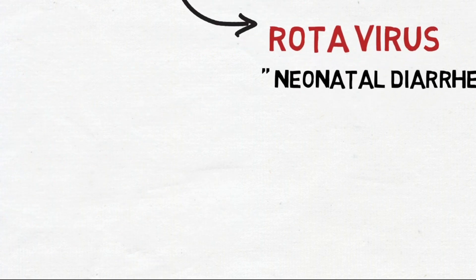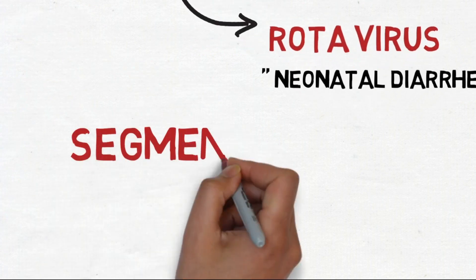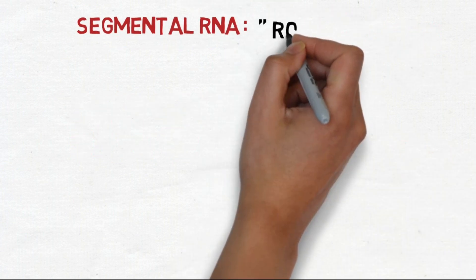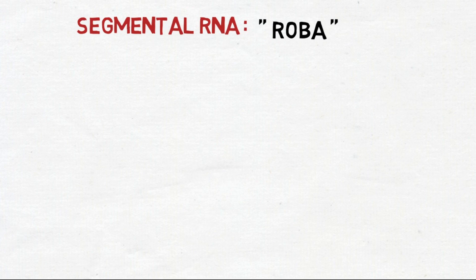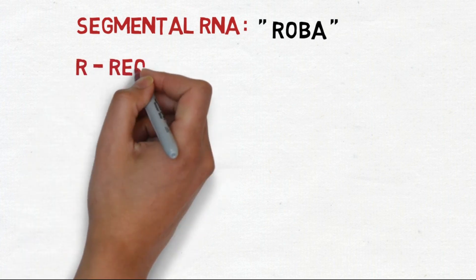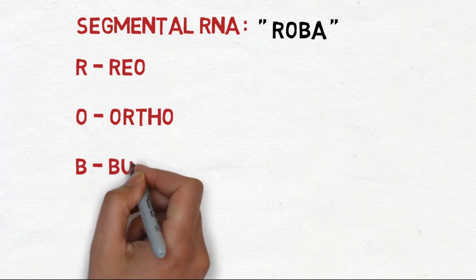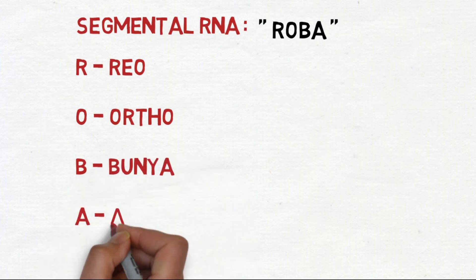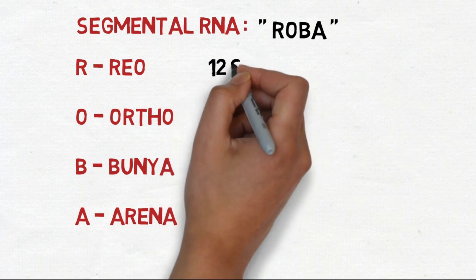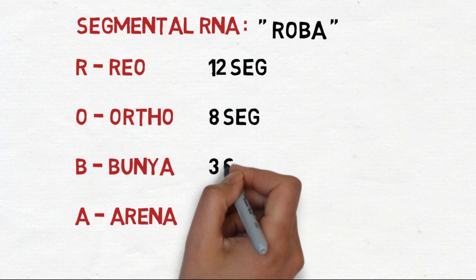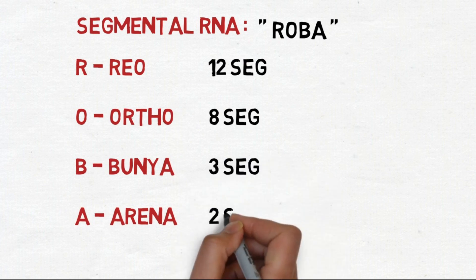The last important thing to note is that we have a couple of segmental RNA viruses, which means that their genome is broken up into segments. You can remember this by memorizing the sentence ROPA: R for Reo, O for Ortho, P for Bunia, and A for Arena. Reo has 12 segments, Ortho has 8 segments, Bunia has 3 segments, and Arena has 2 segments.